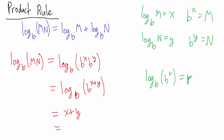Since x is the base b log of m and y is the base b log of n, we've just established that the base b log of m times n equals the base b log of m plus the base b log of n. So that's how we show that property.